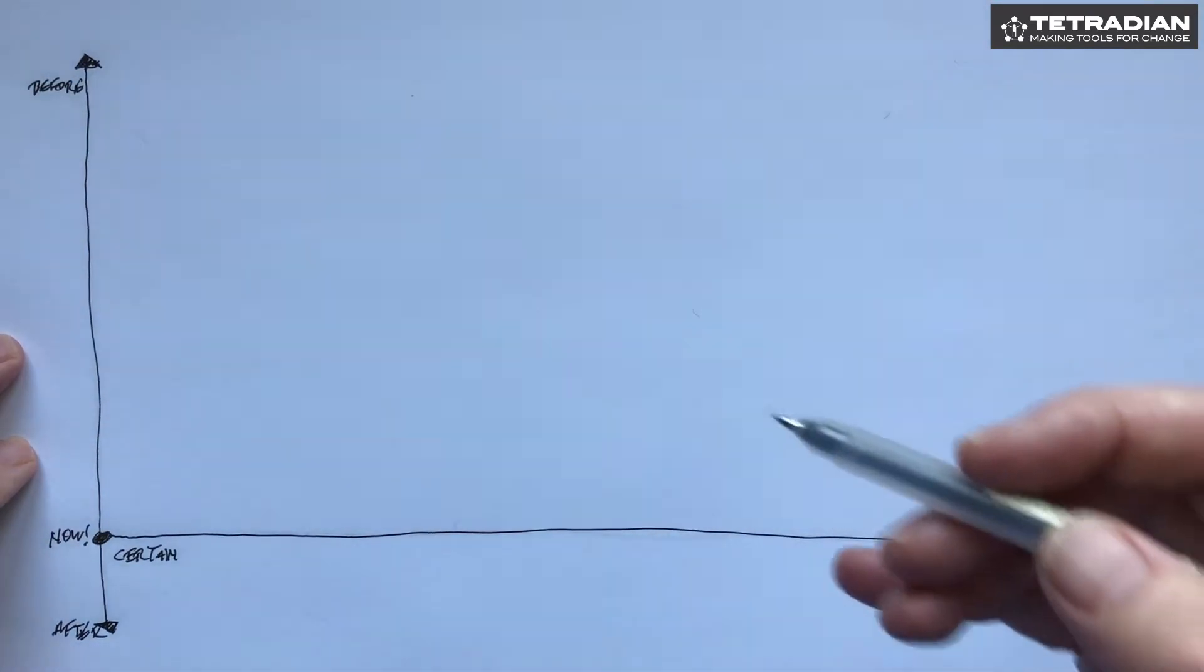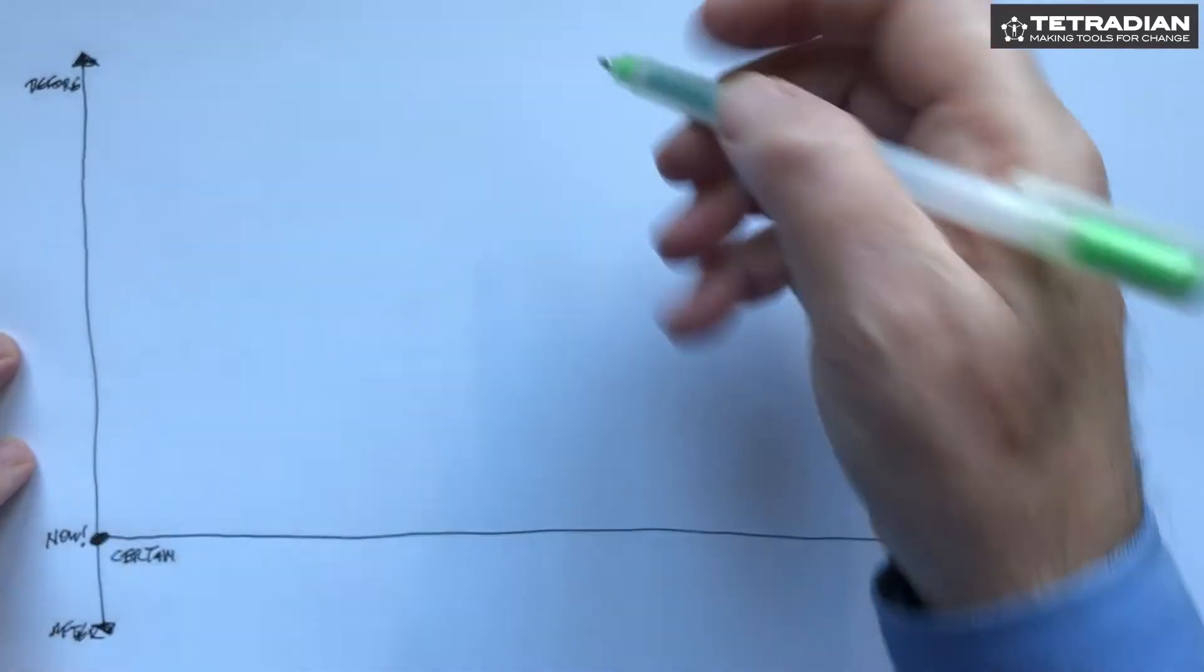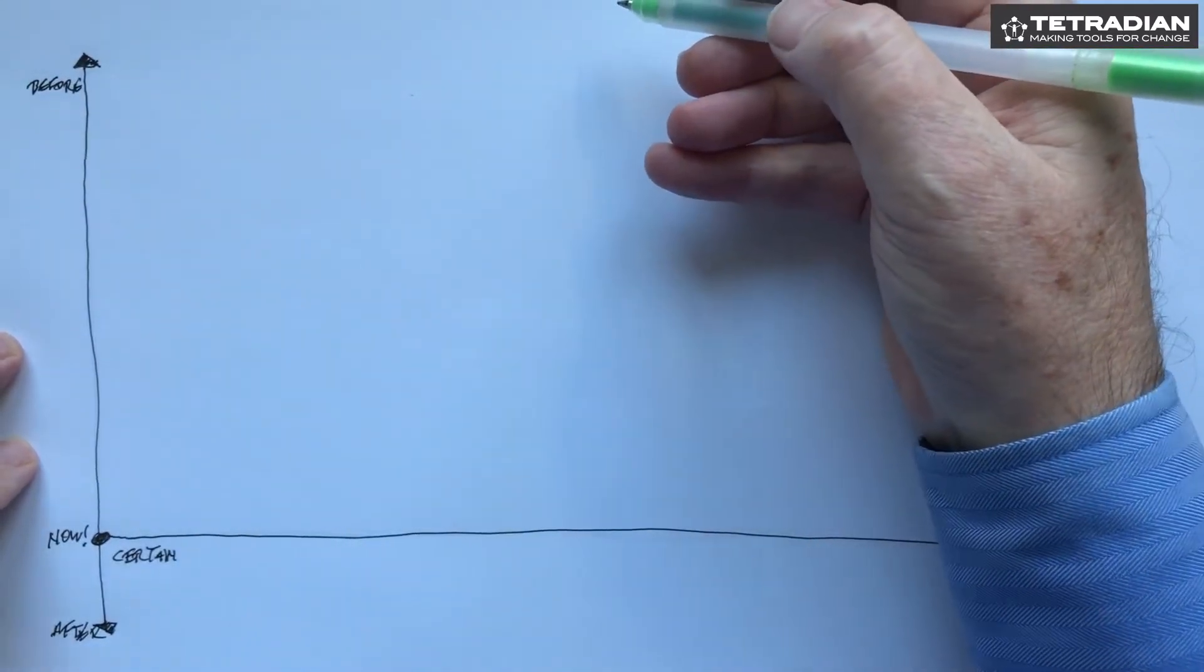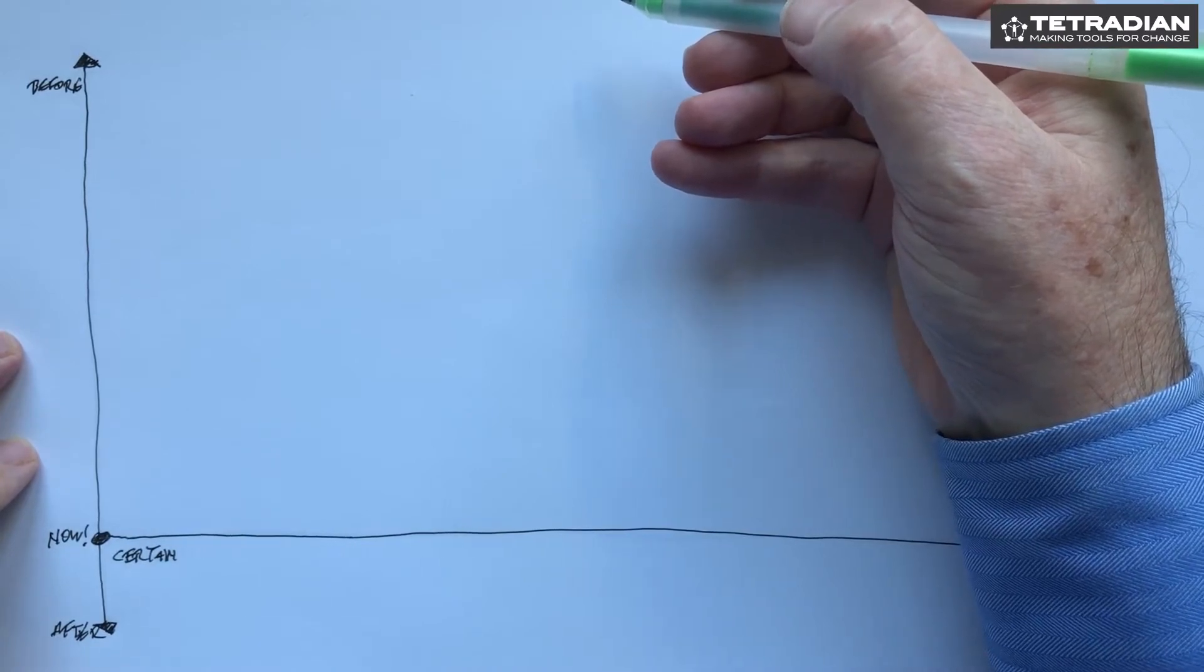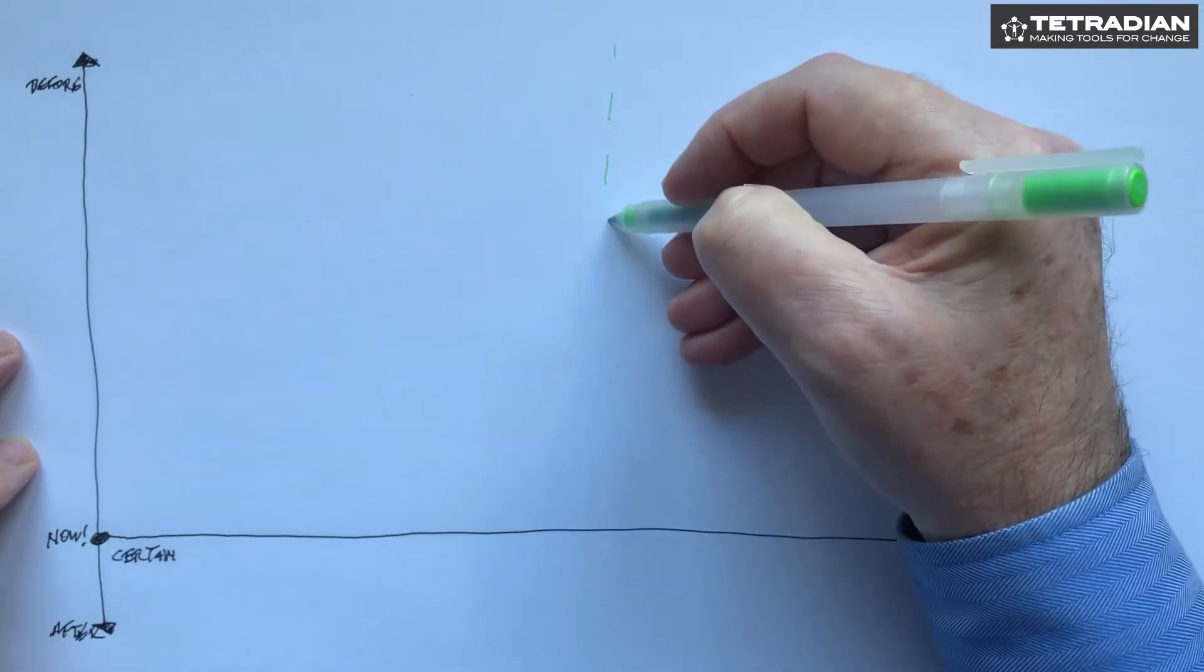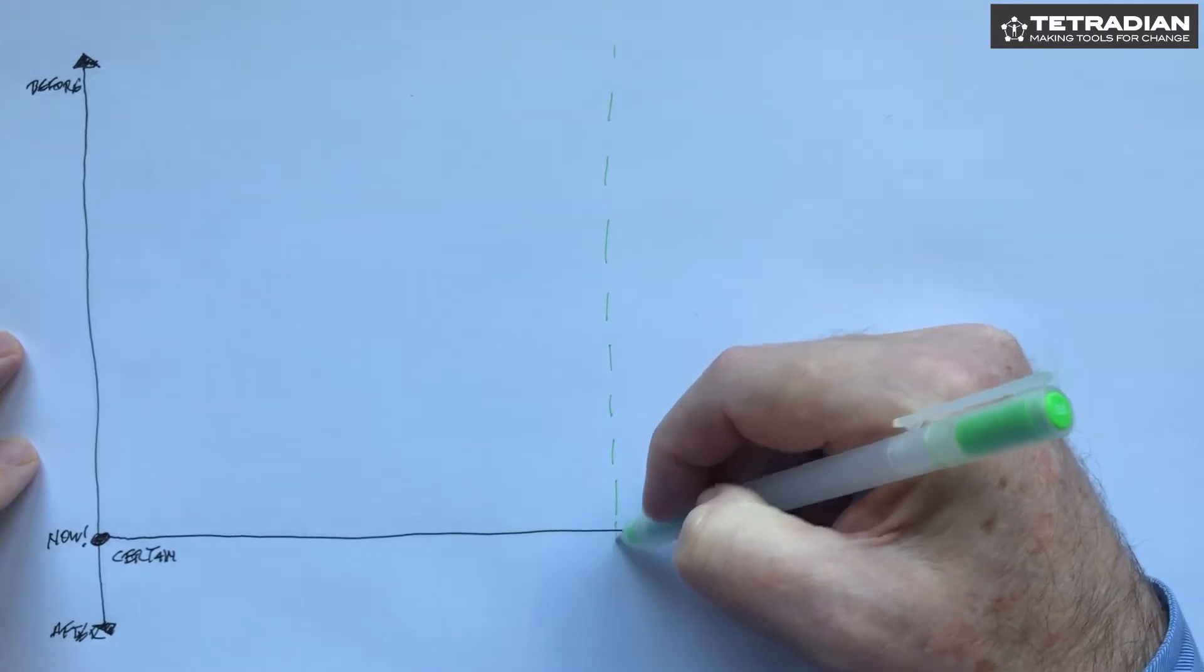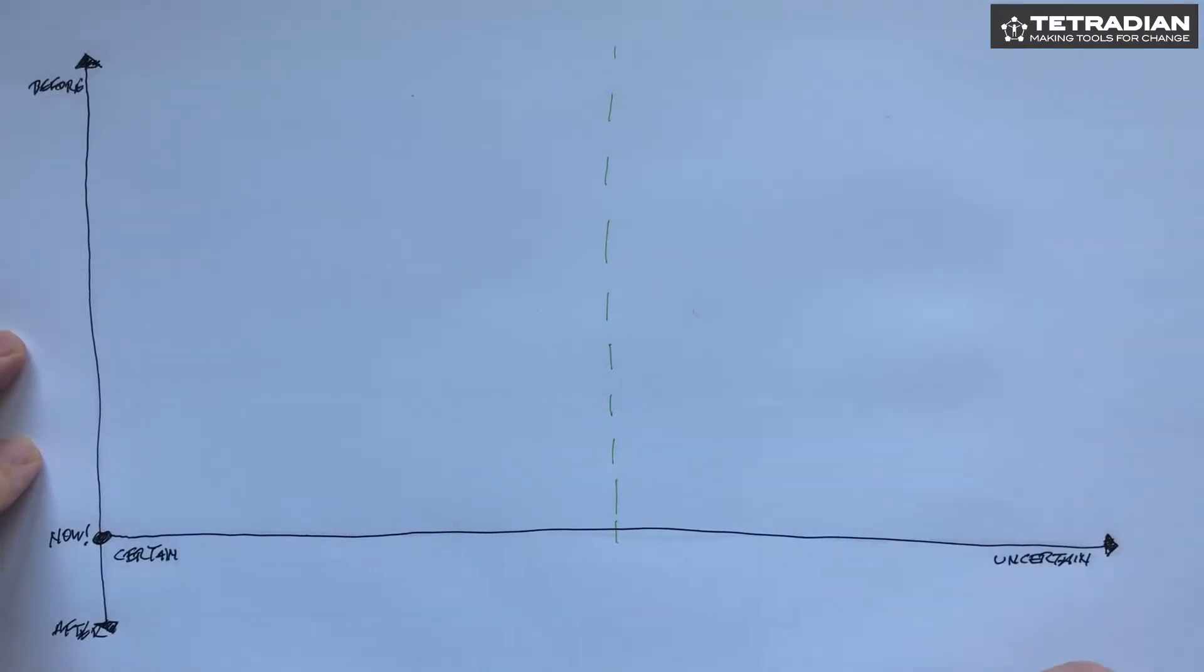Now one of our first descriptions we can put in here is what we might call the inverse Einstein boundary. The classic description that Einstein said is that the definition of insanity is doing the same thing and expecting different results, but there's a certain point when we're dealing with inherent uncertainty where there's a transition where the definition of insanity is doing the same thing and expecting the same results.